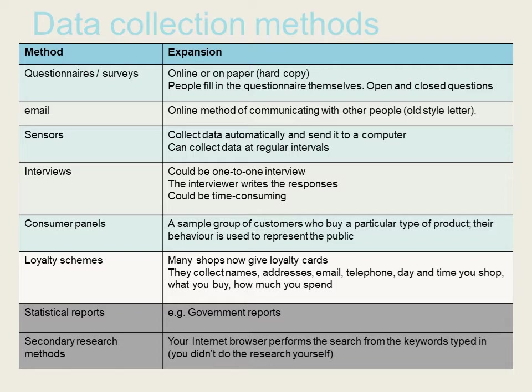Loyalty schemes — many shops now have loyalty cards. They collect information about how often you shop, how much you spend, and that's connected with your name, address, email and telephone number so that they can contact you. There are also statistical reports — these are produced by the government; for example with COVID-19, there's data produced every day about deaths and how many people have been tested. There's also secondary research — an internet browser performs a search for you, so you can type in anything and that research is done for you.